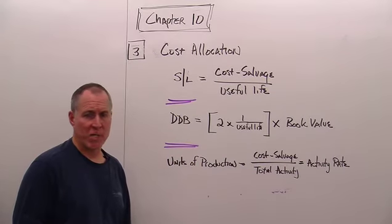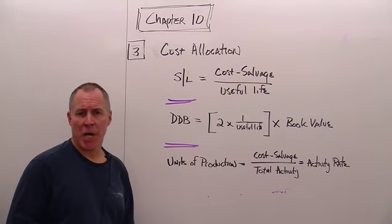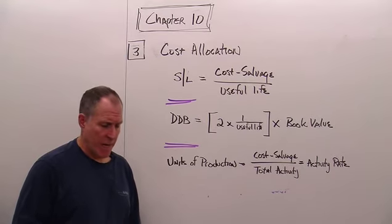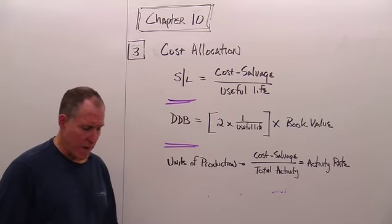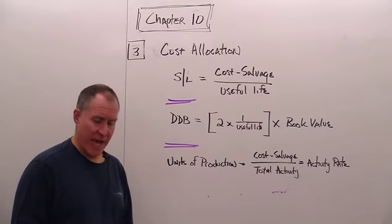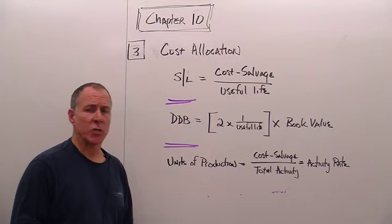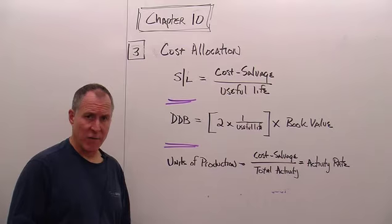Question number three is cost allocation. We have an asset costing $7,200, and it's going to last a number of years. Looking at the problem, we find that this asset is going to last for five years, and we believe at the end of its useful life, it's going to have a salvage value of $1,200.